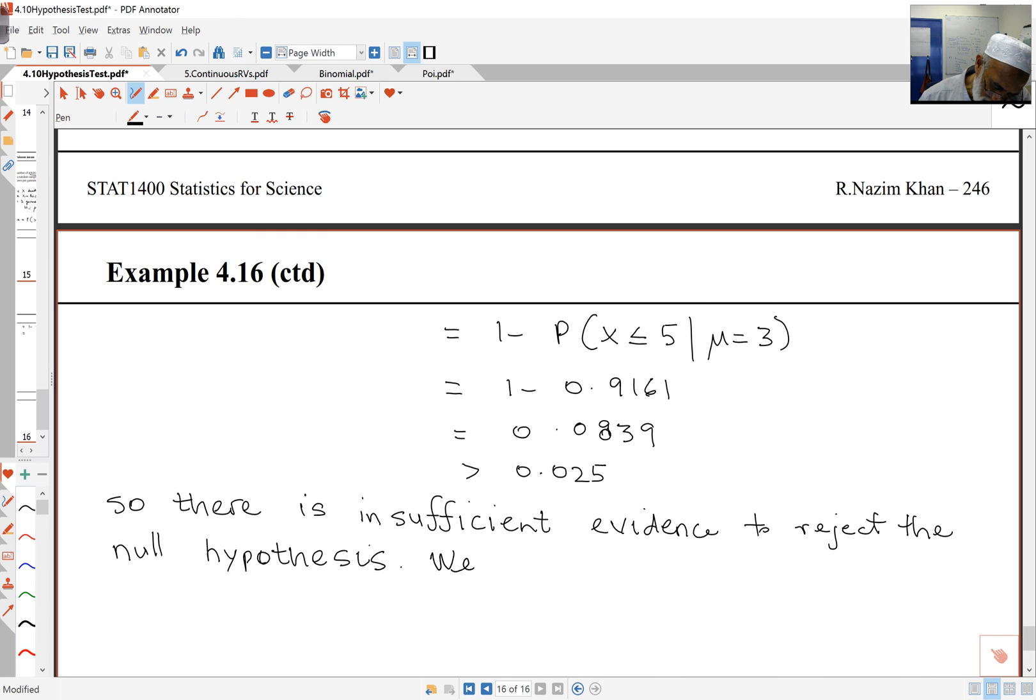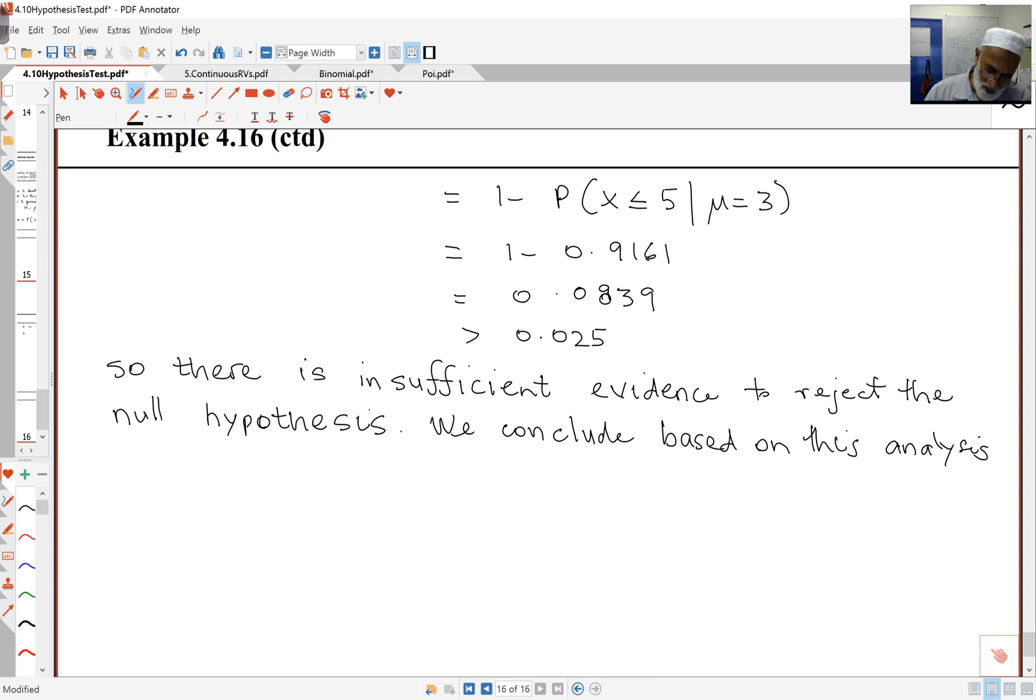We conclude that based on this data or this analysis, the mean number of flaws per garment is not more than one. In other words, the quality control requirement is met.